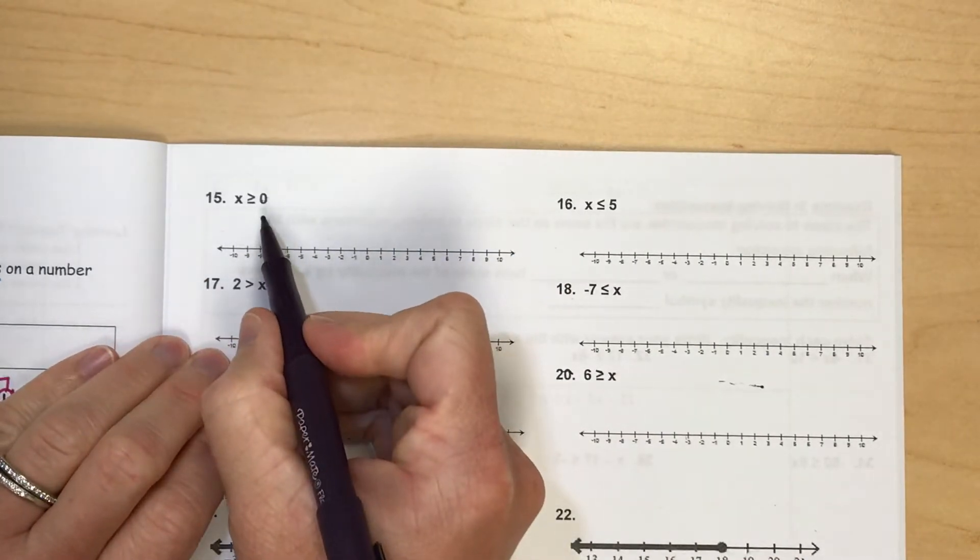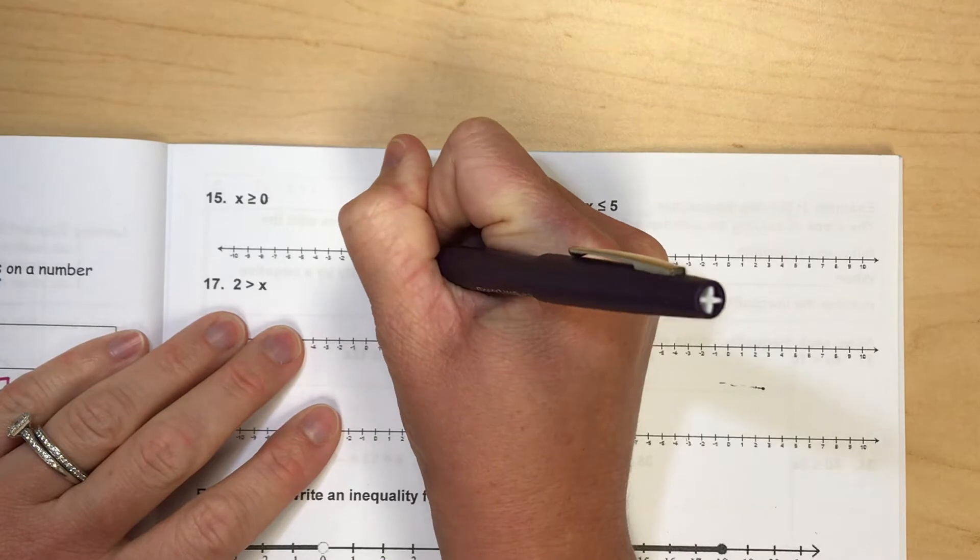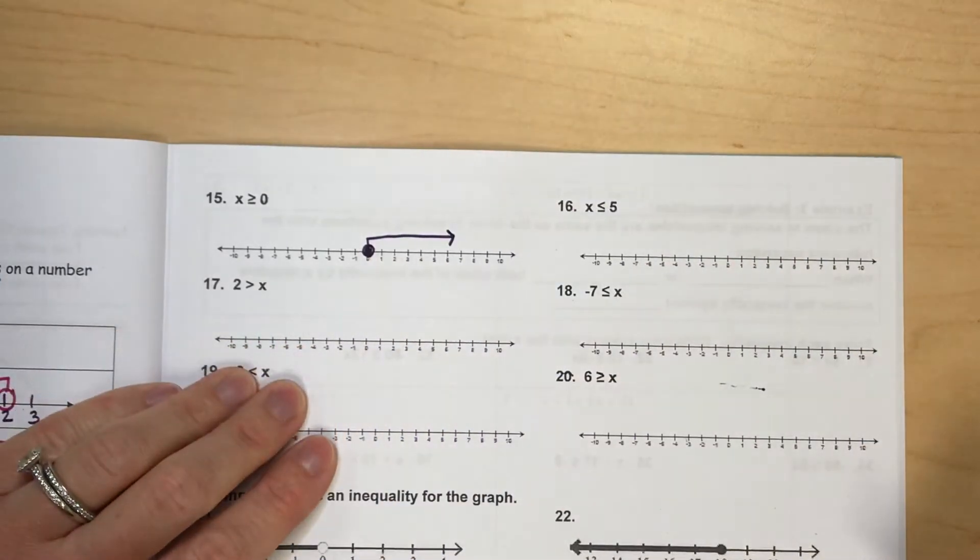Hey, welcome back. Okay, if x is greater than or equal to 0, I'm going to shade in 0 and shade to the right for greater than.